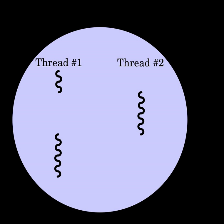Threads differ from traditional multitasking operating system processes in that processes are typically independent, while threads exist as subsets of a process. Processes carry considerably more state information than threads, whereas multiple threads within a process share process state as well as memory and other resources. Processes have separate address spaces, whereas threads share their address space.